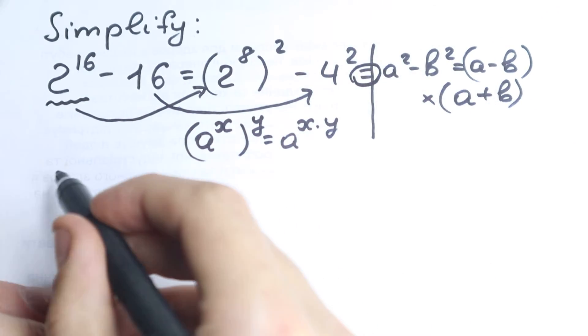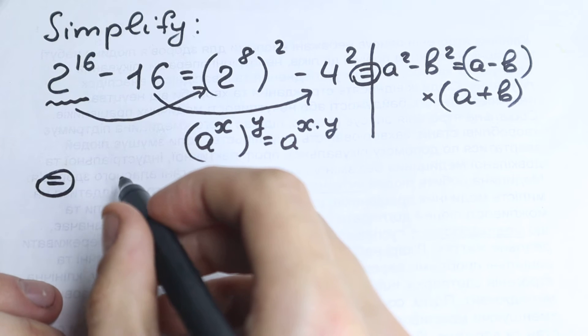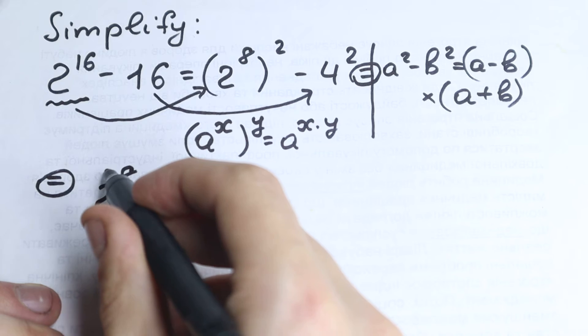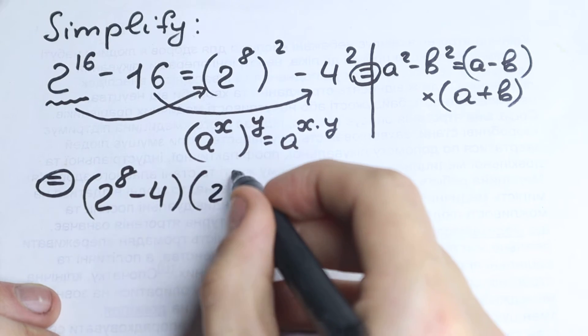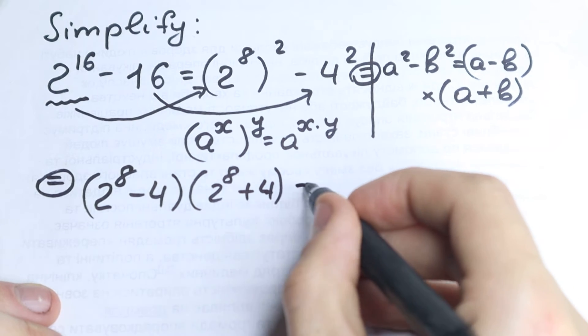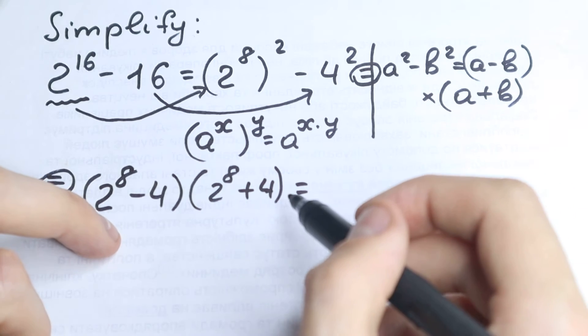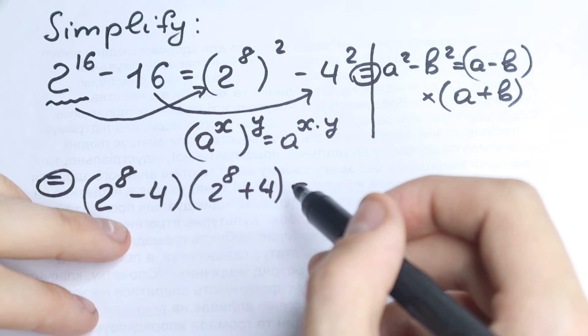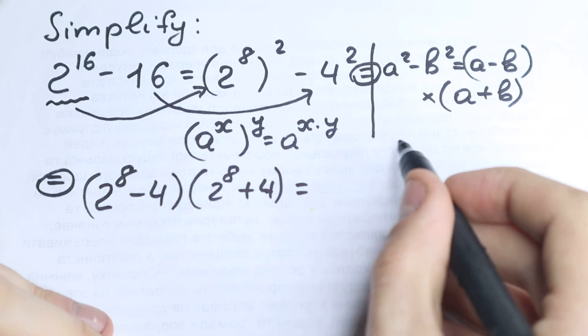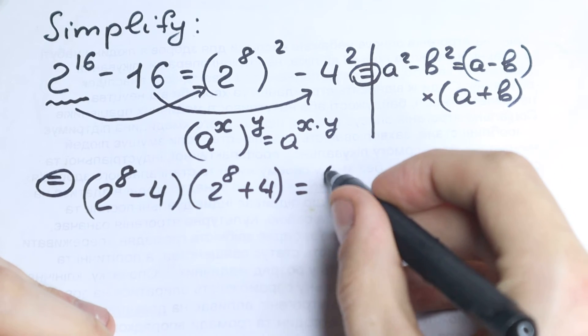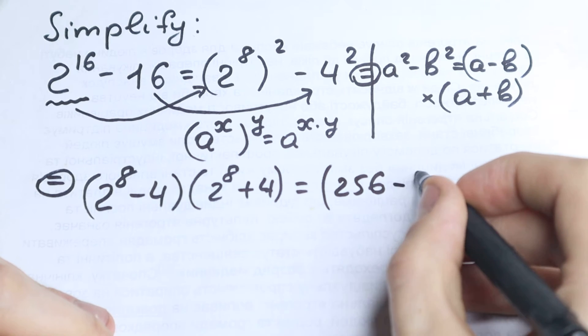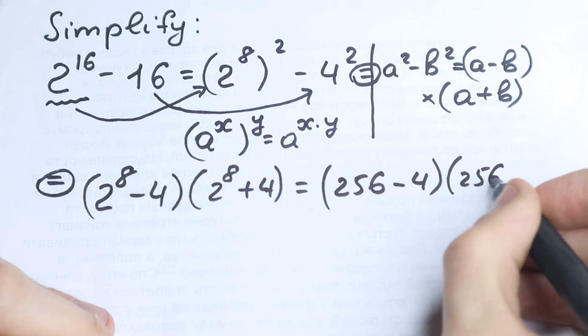I write it right here in a new line, so I have a lot of space. We have 2 to the power 8 minus 4, and times 2 to the power 8 plus 4. We still don't use any calculators, it's really great. Right here, 2 to the 8, it's not like a huge number. We have, looks like 256, I guess. If you don't trust me, you can easily multiply 2 by 2 by 2, 8 times, but I know it.